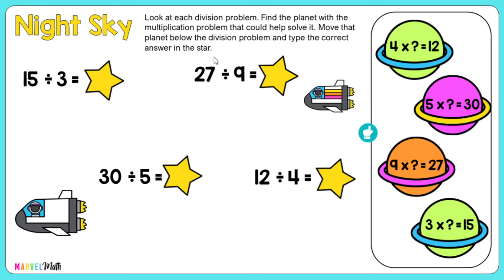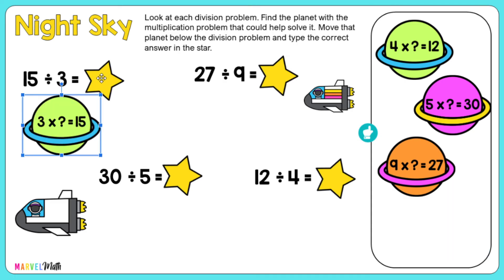Now we have a new slide with the night sky. So you're going to look at the division problem, and then you're going to look over here for a planet with a multiplication fact that you can think about to help you solve it. So 15 divided by 3 equals something. Well, I know 3 times something equals 15. So if I think about that, 3 times 5 equals 15, and then I will type that into the star.